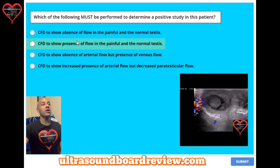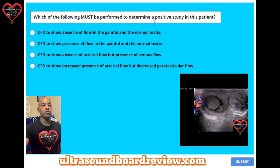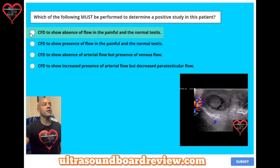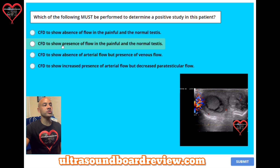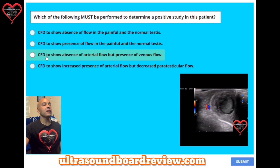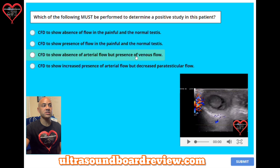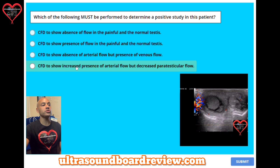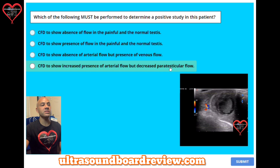Question 31. Which of the following must be performed to determine a positive study in this patient? A: Color Doppler to show absence of flow in the painful and the normal testes. B: Color Doppler to show presence of flow in the painful and the normal testes. C: Color Doppler to show absence of arterial flow but presence of venous flow. Or D: Color Doppler to show increased presence of arterial flow but decreased paratesticular flow.